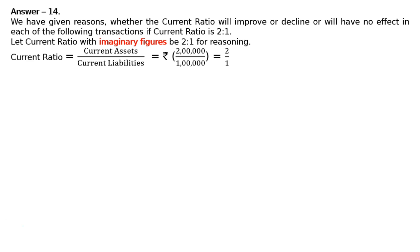Let the current ratio with imaginary figures be 2:1 for reasoning. Current ratio = Current Assets / Current Liabilities = Rs. 2 lakh / Rs. 1 lakh = 2:1. We have taken an imaginary figure of Rs. 2 lakh for current assets and Rs. 1 lakh for current liabilities. We will be giving reasons and testing whether this ratio is fixed, increasing, or decreasing.